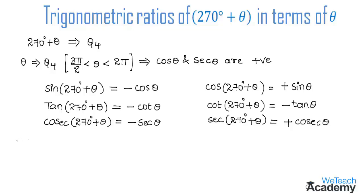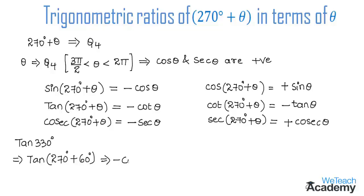Now let us solve a few examples using these formulas. Find the value of tan 330 degrees. We write tan 330 as tan(270° + 60°). Using the formula tan(270° + θ) = −cot θ, we get minus cot 60 degrees. Since cot 60 equals 1 over root 3, the value of tan 330 degrees is minus 1 over root 3.